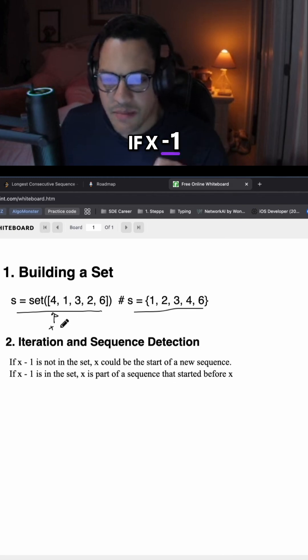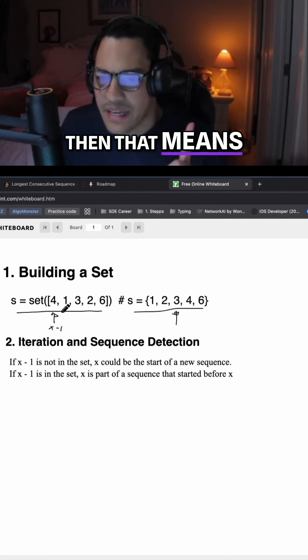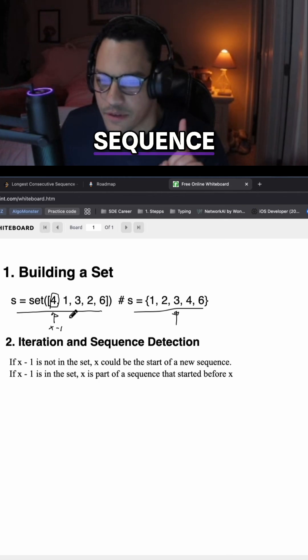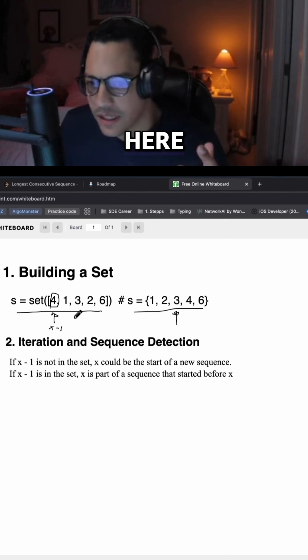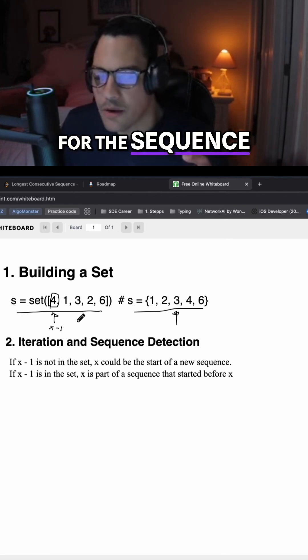If x minus 1, which is equal to 3, is in the set, then that means that x is not the starting of a sequence. And particularly here we want to look for the sequence starter.